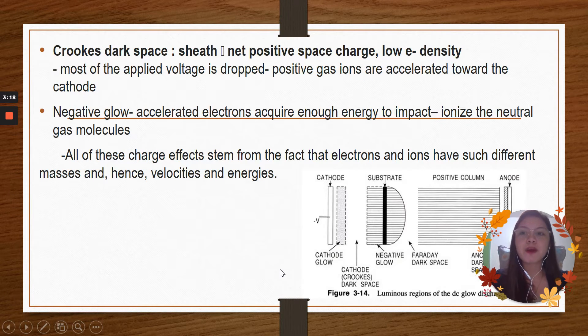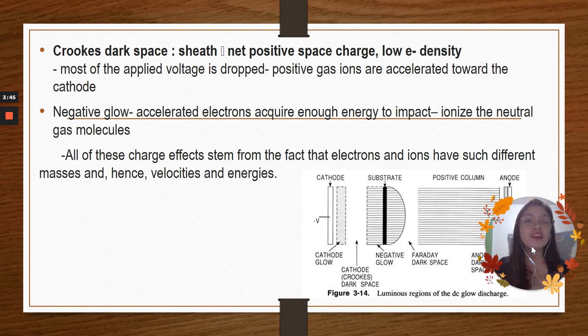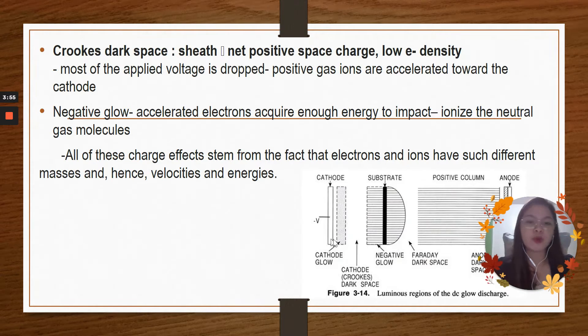And for the next part, we have the luminous regions of the direct current glow discharge. As you have remembered, in the first part of this report, I have shown you a picture of the classic glow discharge in a Crookes tube source. And in this part, I would like to expand or explain what are the things that you can see inside a glow discharge Crookes tube source. First, we have the cathode glow.